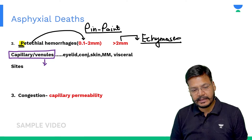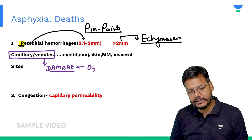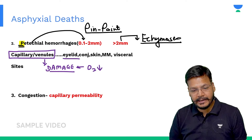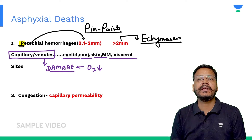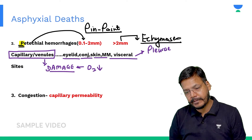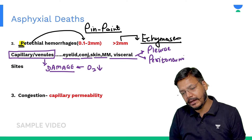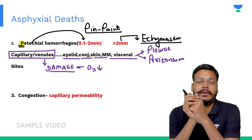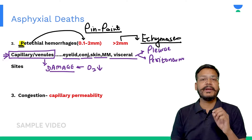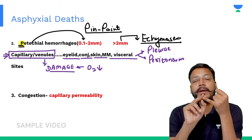Petechial hemorrhages are due to capillary and venule rupture. When oxygen supply is lacking, there is damage to capillaries and venules of the eyelid, conjunctiva, skin, mucous membrane, and visceral surfaces — either visceral pleura or visceral peritoneum. This is petechial hemorrhage resulting from oxygen deficiency causing capillary and venule damage.